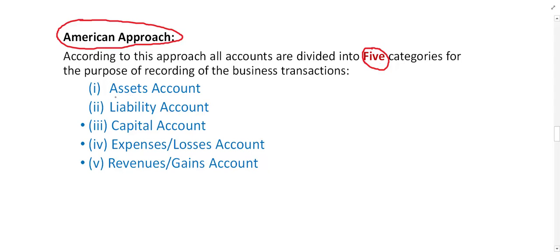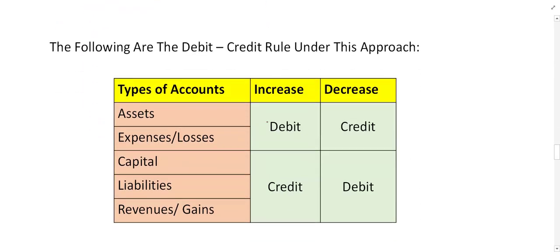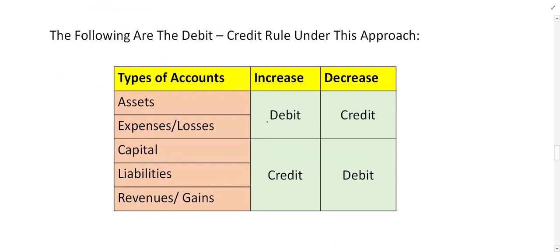The five types of accounts are: asset accounts, liability accounts, capital accounts, loss and expenses accounts, and finally revenue accounts. All accounts are divided into these five types. Now the question is how we can identify the rules of debit and credit for each, and for this there is a small table.